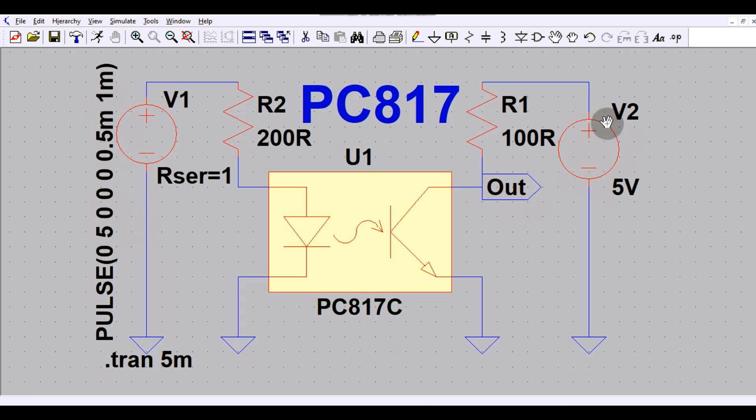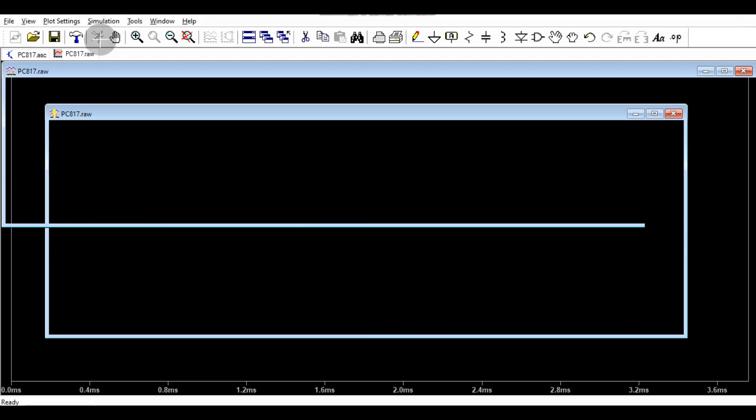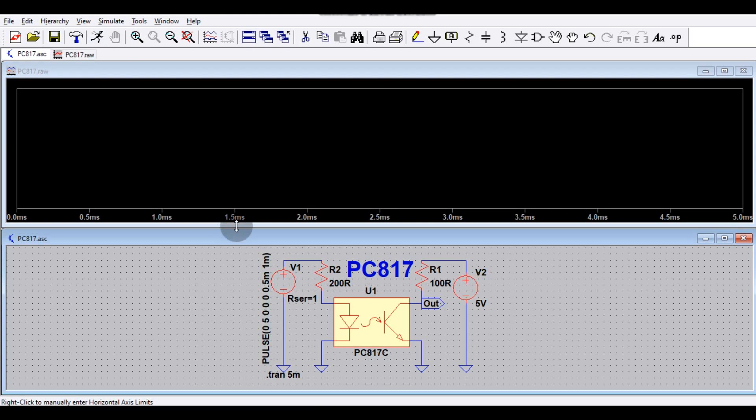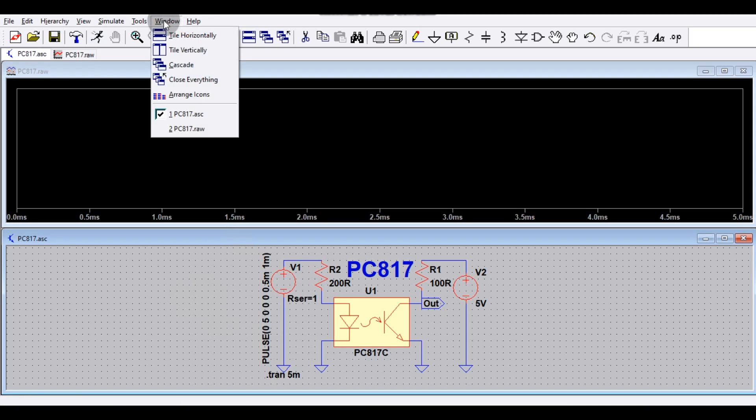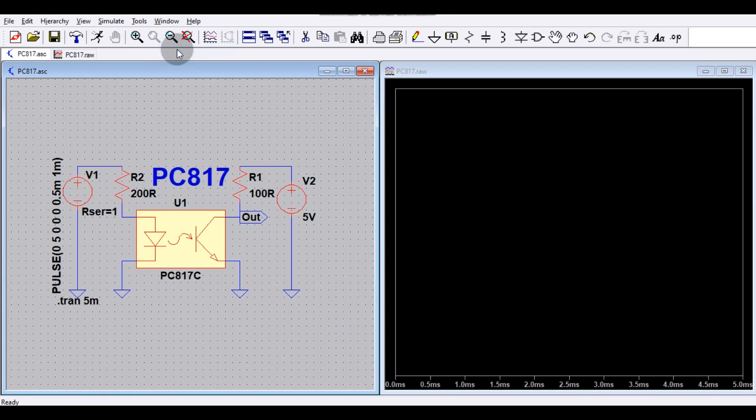Now I will run the simulation here. Let us run the simulation. So run it here and now you can see you have two windows. One window you can see the circuit and in another window you can see the waveform. So just go at this window and tile window vertically. Now you can see two windows here.